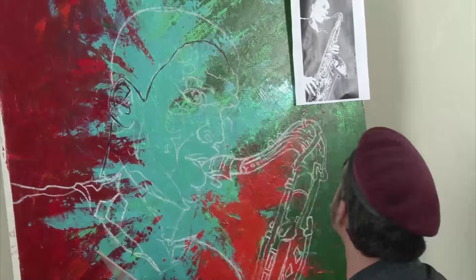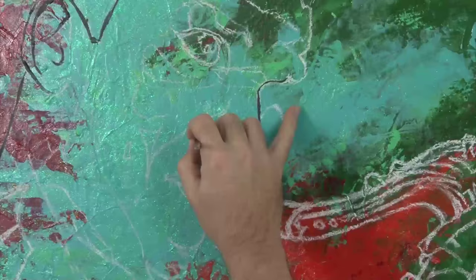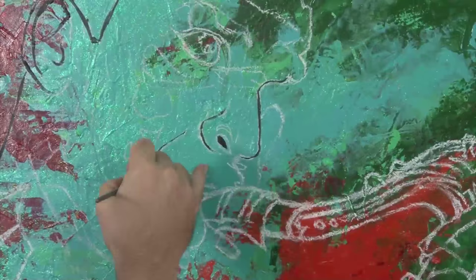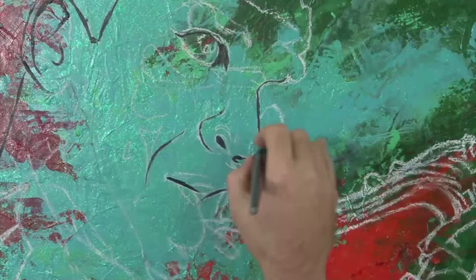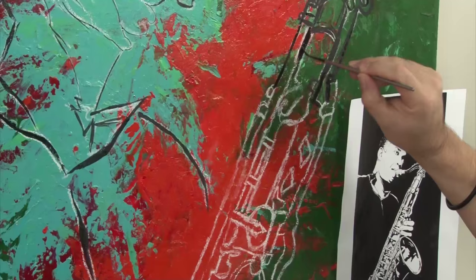One would think that pastel powder would compromise the adhesion of the key line paint but it doesn't. Mix the paint with water so it is the viscosity of cream and you will find that it soaks through the fine powder and keys to the underlying base. Some of the lines come out a little coarse and fuzzy but that's not a problem on a work such as this.